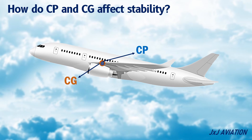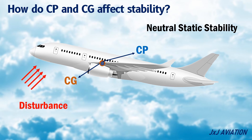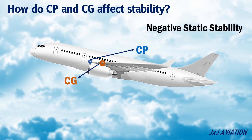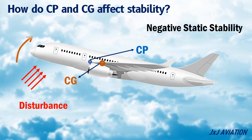If the center of pressure and the center of gravity are at the same location, the aircraft will have neutral static stability. This means that after any disturbance, the aircraft will have a tendency to maintain this new attitude. If the center of pressure lies ahead of the center of gravity, the aircraft will have negative static stability. This means that if there is any disturbance on the aircraft, the tendency of the aircraft will be to deviate from its original attitude, which is not desirable on commercial aircraft.